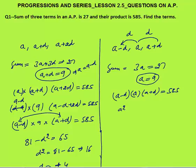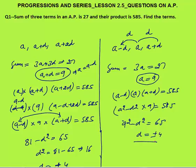For the product: (a−d) times a times (a+d) = 585. This simplifies to (a²−d²) times a = 585. Substituting a=9: 81 minus d² equals 65, giving d = ±4. This is a far easier method compared to the previous one.